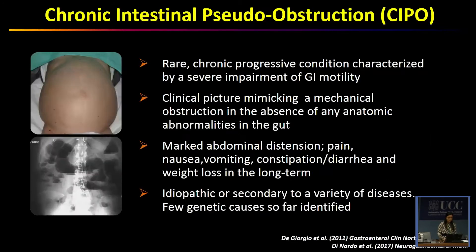Chronic intestinal pseudoobstruction is a rare, chronic and progressive condition characterized by a severe impairment of gastrointestinal motility, with a clinical picture mimicking a mechanical obstruction in the absence of any anatomic abnormalities in the gut. Patients have marked abdominal distension, pain, nausea, vomiting, constipation and diarrhea, and weight loss in the long term. This condition could be idiopathic or secondary to a variety of diseases, and so far only few genetic causes are identified.